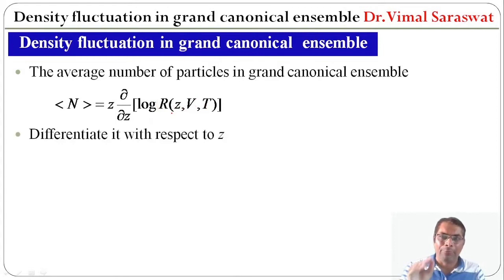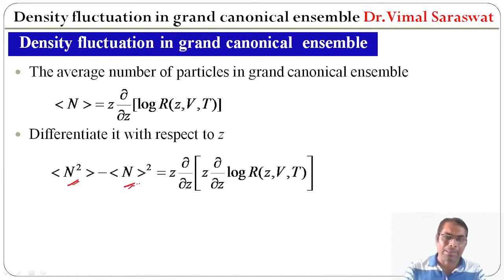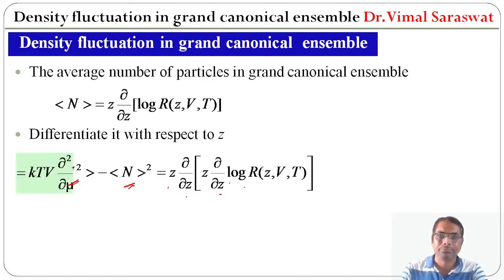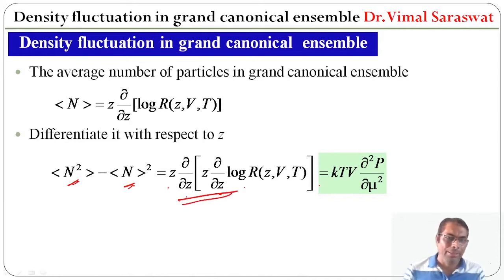If we differentiate with respect to z, we get ⟨N²⟩ − ⟨N⟩² = z · (∂/∂z)[z · (∂/∂z) log Ω]. Computing this value gives kT · V · (∂²p/∂μ²), where μ is the chemical potential and p is the pressure.